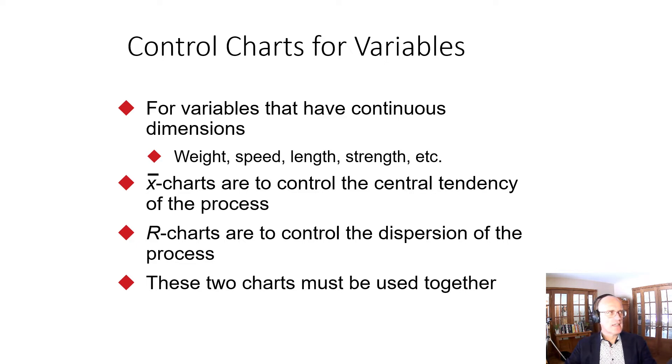There are two types of measures: variables and attributes. In this video, we're going to talk about developing statistical process control charts for variables. Variables are continuous measures—things like weight, speed, length, strength—that can take a range of values. Attributes are more binary: good, bad, pass, fail, and they have a different set of statistical process control charts.